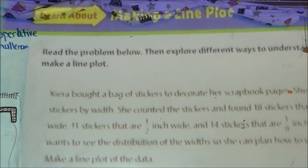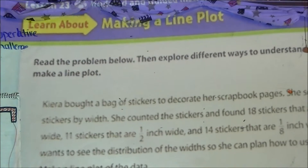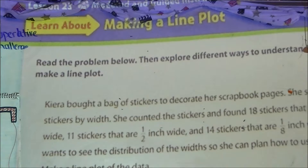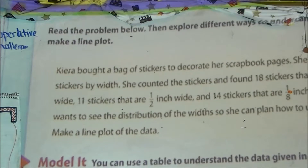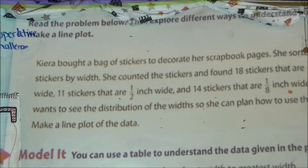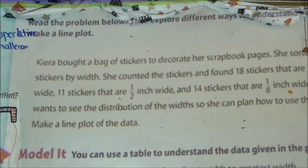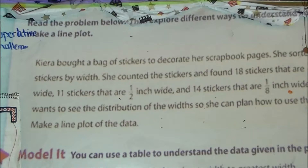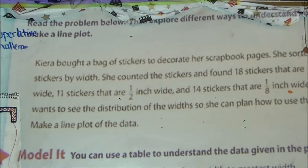Look at page 234. We're going to now connect what we've learned today — explore different ways to understand how to make a line plot. Kira bought a bag of stickers to decorate her scrapbook pages. She sorted them by width and found 18 stickers that are 1/4 inch wide, 11 stickers that are 1/2 inch wide, and 14 stickers that are 1/8 inch wide. Kira wants to see the distribution of widths. Make a line plot out of the data.